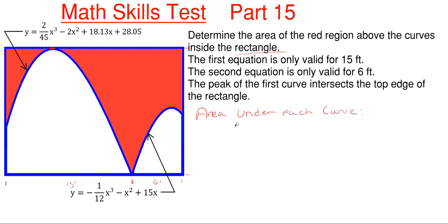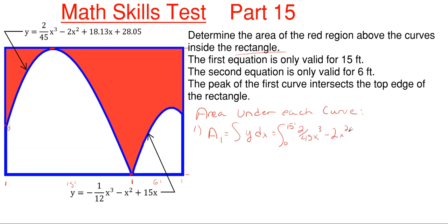The way you get the area under the curve — let's call this the first one — is the integration of your equation with limits from its starting point to its ending point. So from zero feet up to 15 feet. Area one is equal to the integration with respect to x from zero to 15 of the equation: 2/45 x cubed minus 2x squared plus 18.13x plus 28.05 dx.